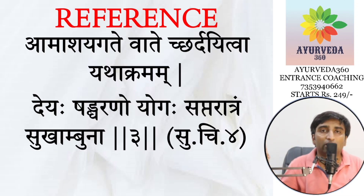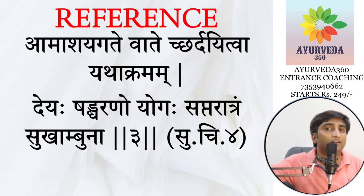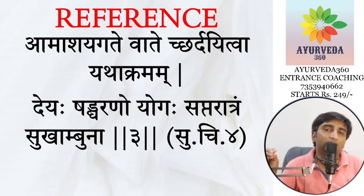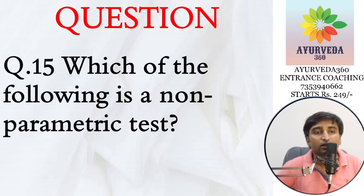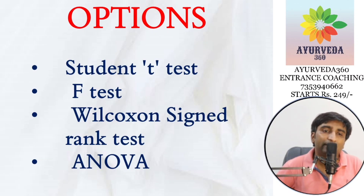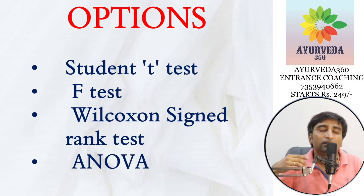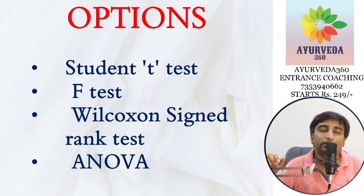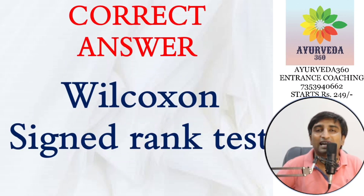The questions are not presented in the same order as the question paper because modern/contemporary science questions will be covered at the end, so the order may vary. Question 15 is a very simple one: which is a non-parametric test? The options are T-test, F-test, and ANOVA — all of which are parametric tests. The answer is the Wilcoxon Signed Rank Test, which is straightforward and covered in the BMS syllabus.